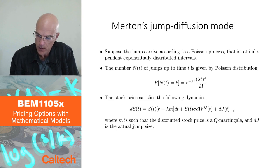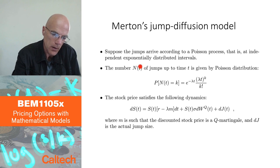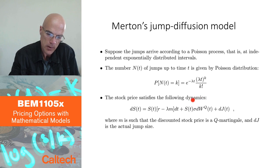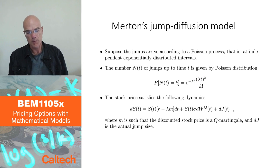So N(t) here is the notation for this Poisson process, which counts the number of jumps. It is known from probability theory that having k jumps up to time t, the probability of that is given by the so-called Poisson distribution, which is given here. It has a parameter lambda, which corresponds to the frequency of jumps.